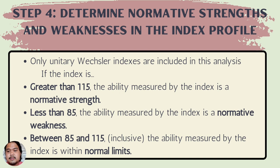The WAIS descriptive categories are as follows: less than 70 is extremely low, 70 to 79 is borderline, 80 to 89 is low average, 90 to 109 is average, 110 to 119 is high average, and 120 and above is superior.